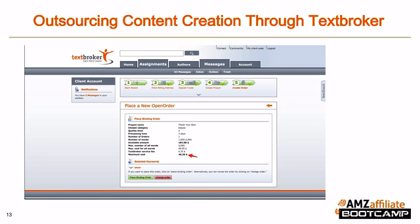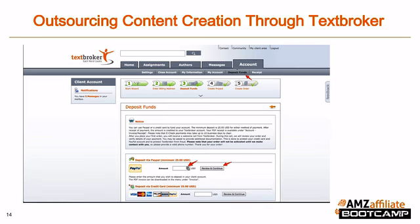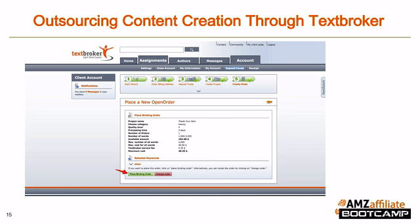Then just click calculate order and you'll be able to see the maximum cost of your article. Open a new tab, go to account, deposit funds, and deposit the exact amount you need — or a bit more if you're planning on hiring for other articles. Come back to the old tab and place the binding order and you're done. Wait a few days to get the article; once you receive it, check it carefully, make sure you got what you want, and then either accept it or request a revision. Once in a while you'll get a really bad article from a new four-star writer — if this happens, don't hesitate to decline it and the TextBroker team will make sure you get another writer without having to pay extra.